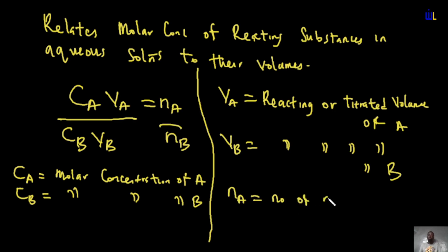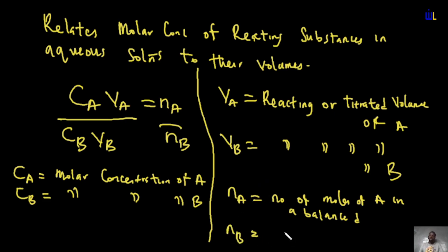Na is the number of moles of A in a balanced equation, and nb is the number of moles of B in a balanced equation. Before finding na or nb you need to balance the equation first. Note: this is not the number of moles in solution — it is specifically the number of moles from the balanced equation.